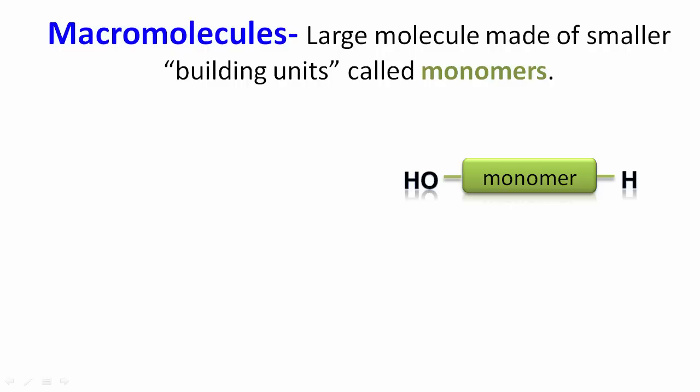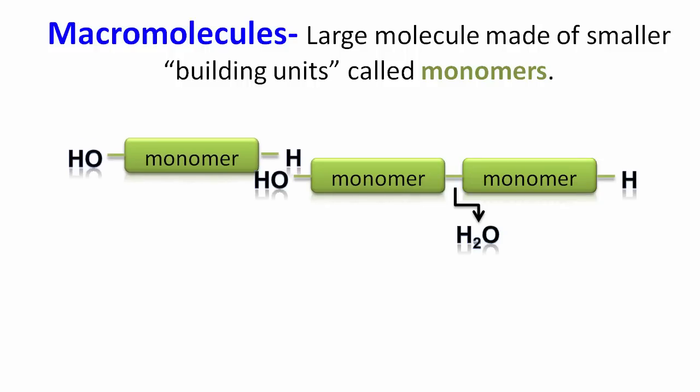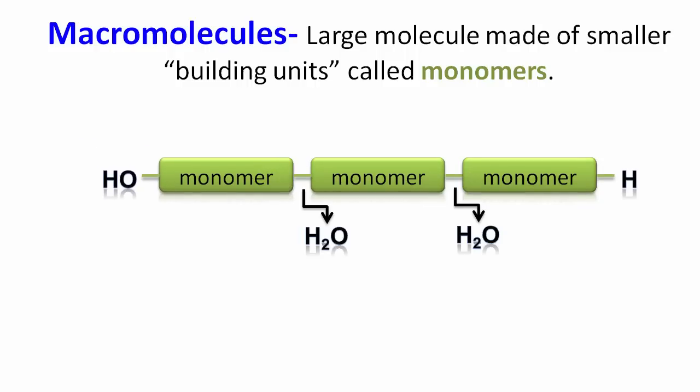So it's kind of like Legos. We might have one piece and we can connect it with another one. And chemically bonding these two together, extracting the water from in between, we now have two monomers stuck together. Of course, we can do this multiple times over to make something larger called a polymer or a macromolecule.